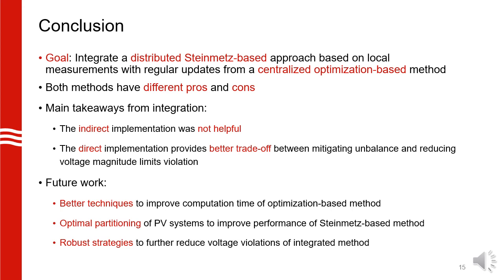To conclude, we compared the centralized and distributed approaches to mitigate voltage unbalance in distribution grids and saw that both approaches have different pros and cons. The main goal of this work was to integrate these two methods to achieve near-optimal performance. We saw from the simulation results that the indirect implementation was not really helpful and did not improve performance a lot, whereas the direct implementation provided a better balance between minimizing voltage unbalance and reducing the risk of voltage magnitude limit violations. For future work, we are looking at better techniques to reduce computation time for the optimization-based method, partitioning PV systems into multiple groups for the Steinmetz-based method, and different robust strategies for the integrated method to further reduce voltage magnitude limit violations.